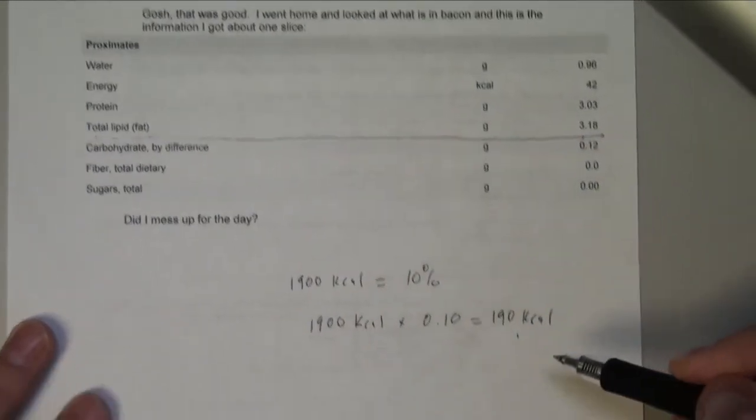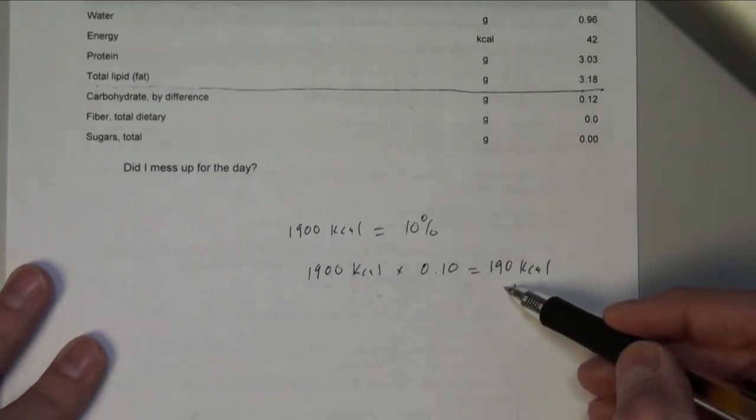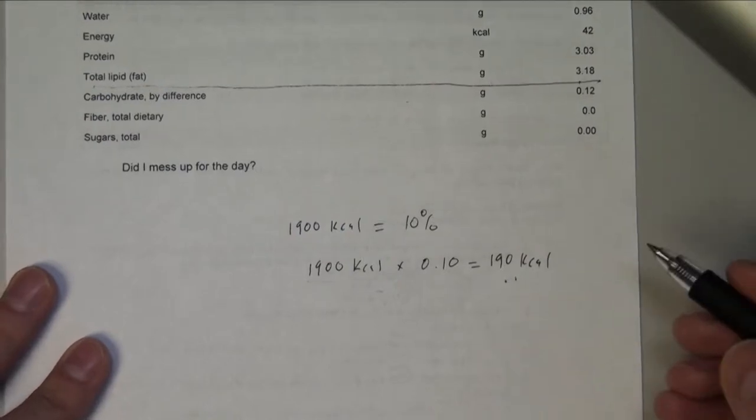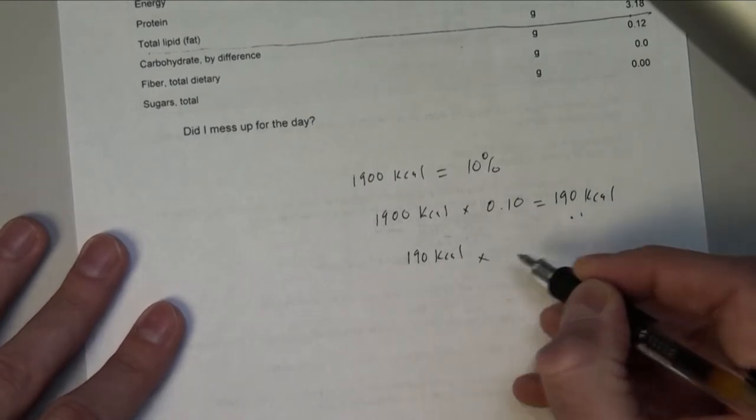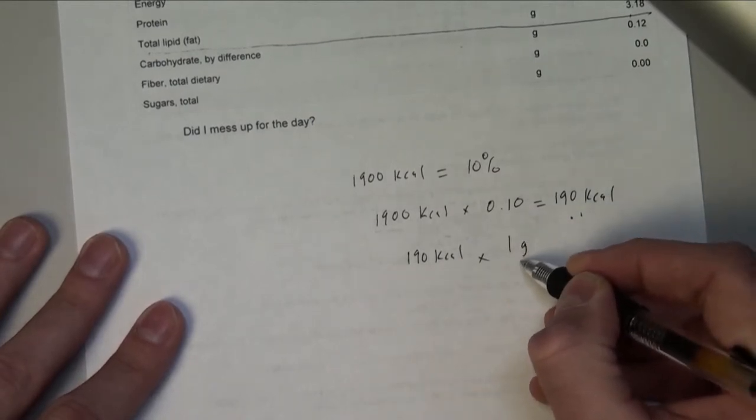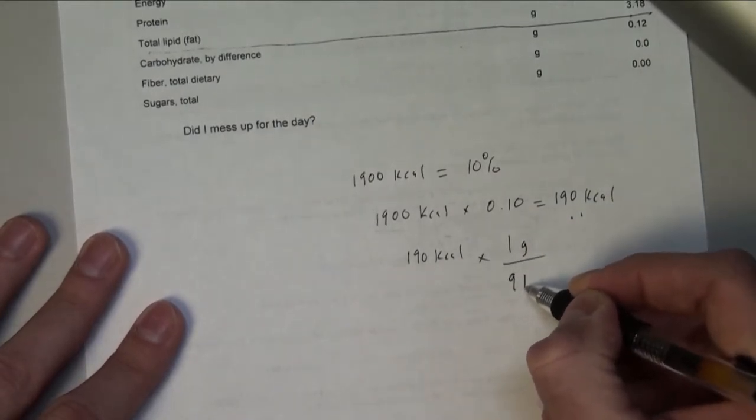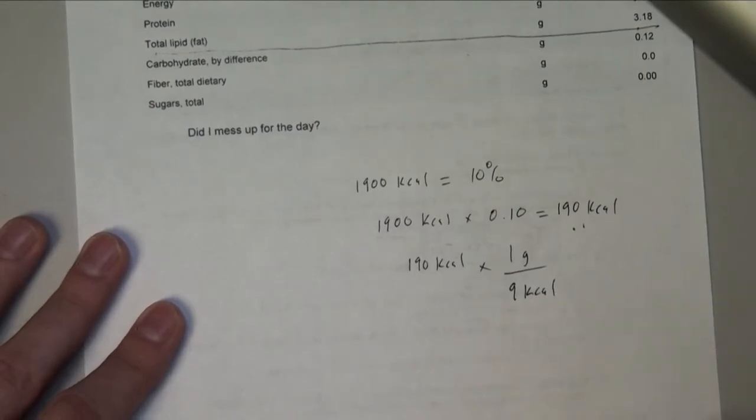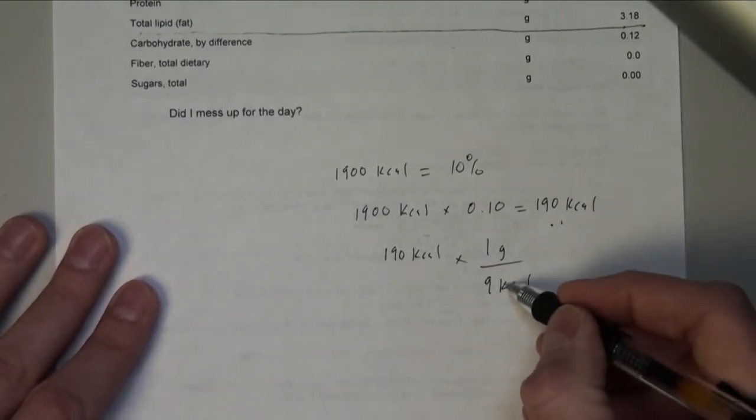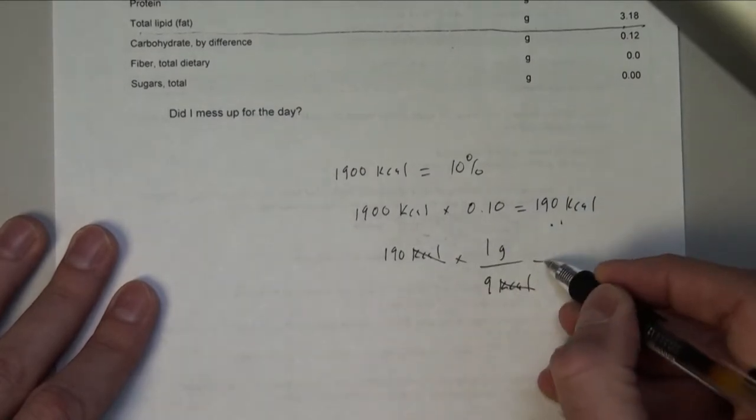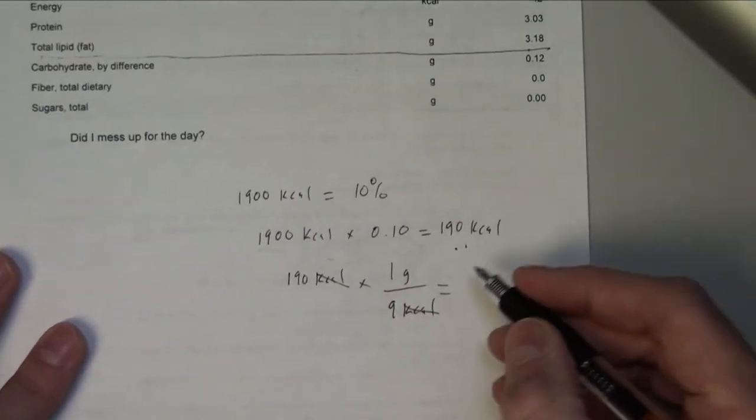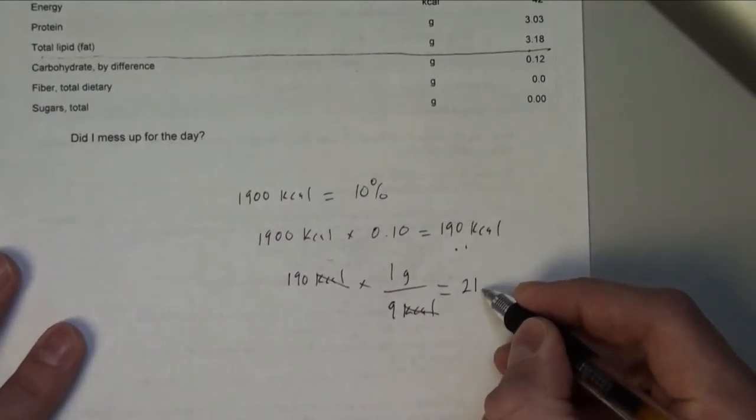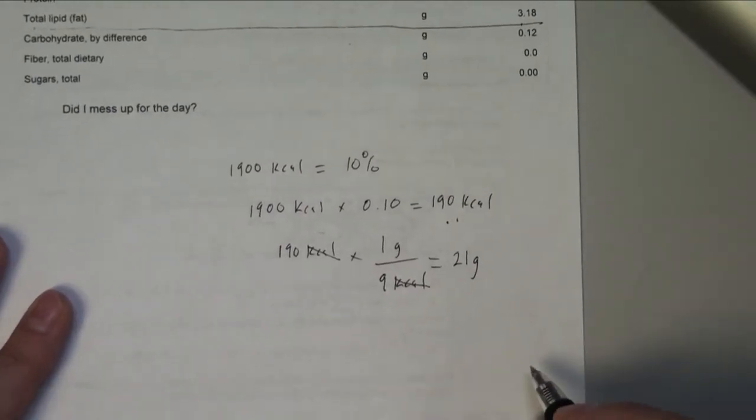So I want to get this 190 kilocalories converted to grams, so I can do some fairly simple math. Now remember, fats are a little bit different in that there's approximately 9 kilocalories per gram. So I'm not going to use 4, I'm going to use 9. Cross these out. And what we'll see is I should have approximately 21 grams of fat.